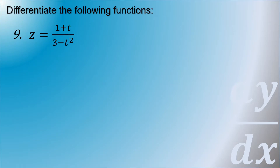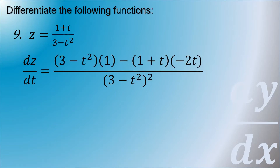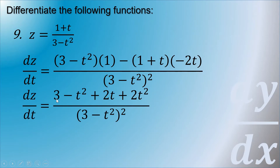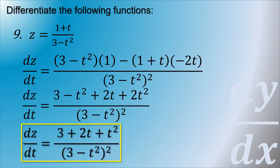Next example: z is equal to (1 plus t) over (3 minus t squared), using the division rule. Taking the denominator (3 minus t squared) times the derivative of the numerator (which is 1), minus the numerator (1 plus t) times the derivative of the denominator (which is negative 2t), all over (3 minus t squared) squared. Simplifying the numerator: 3 minus t squared plus 2t plus 2t squared, which gives 3 plus 2t plus t squared, all over (3 minus t squared) squared.